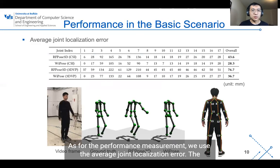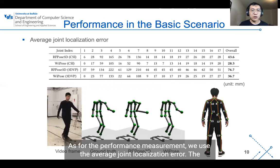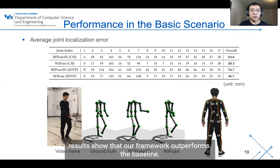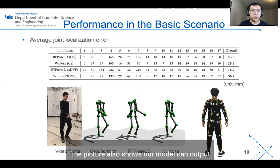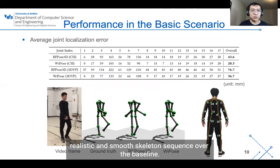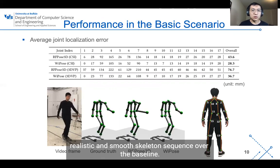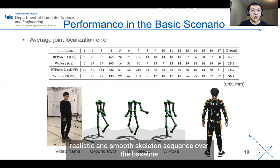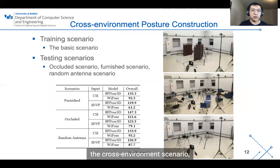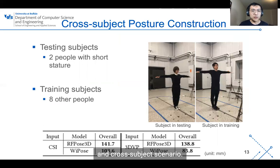As for the performance measurement, we use average joint location error. The results show that our framework outperforms the baseline. This picture also shows our model can output realistic and smooth skeleton sequences over the baseline. Our model also outperforms the baseline in the occluded scenario, the cross-environment scenario, and cross-subject scenario.